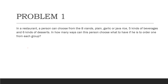Problem 1: In a restaurant, a person can choose from eight variants — plain, garlic, or java rice — five kinds of beverages, and six kinds of desserts. How many ways can this person choose what to have if ordering one of each group? This is the multiplication rule. We have three rice choices, five beverages, and six desserts. Multiplying: 3 × 5 × 6 = 720 ways.